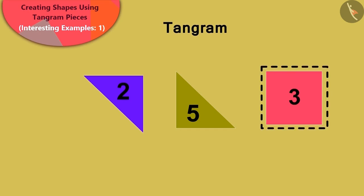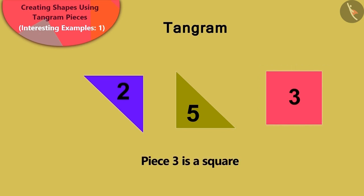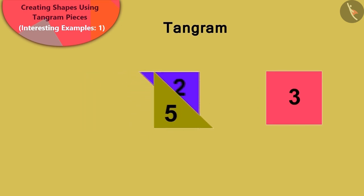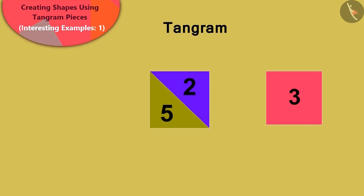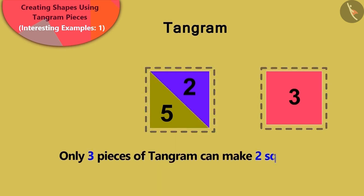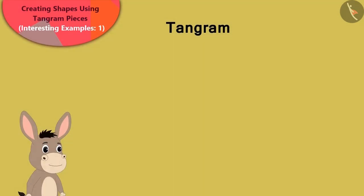Well done, children! Your answer is absolutely correct. Piece number three is a square, and we can join pieces number two and five this way to make another square.